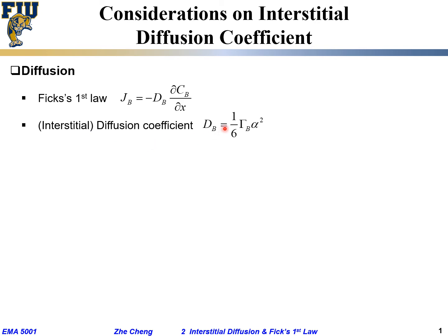It has a strange unit of meter squared times gamma over second. Gamma is the successful jumping frequency, which has a unit of 1 over second or hertz. So this is the diffusion coefficient.